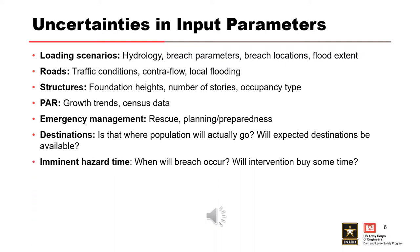Eminent hazard time — when is the breach going to occur? This involves a lot of natural variability. For something like levy overtopping, there may be potential for intervention: we have the resources, we have the personnel, and we might be able to sandbag and buy ourselves a little time. But in other failure modes you won't have that option. There's mostly natural variability here, but there are things we can do to get a better understanding of the potential for intervention.